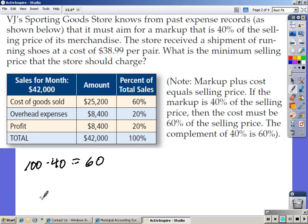Now, next step, we get to use our formula. If the cost of my merchandise is $38.99, $38.99 divided by the complement of my markup which is 60%. Go ahead and work that out. $38.99 divided by .6 is 64.983 repeating.